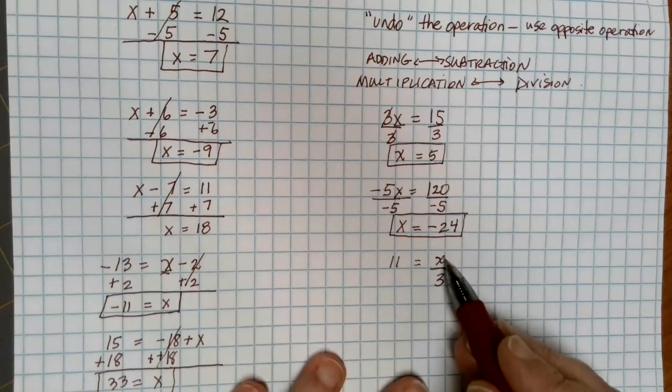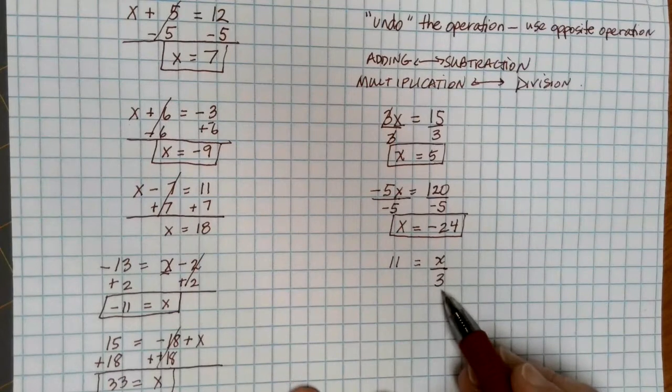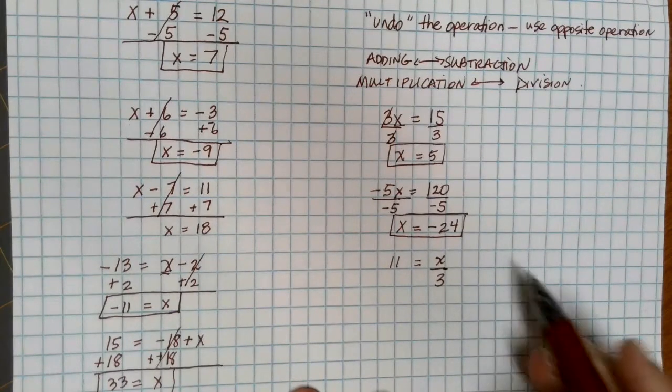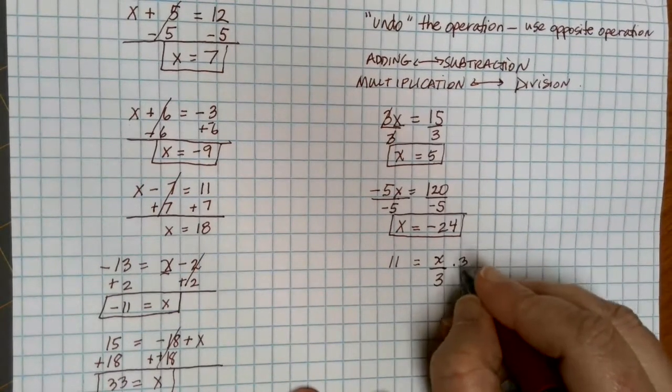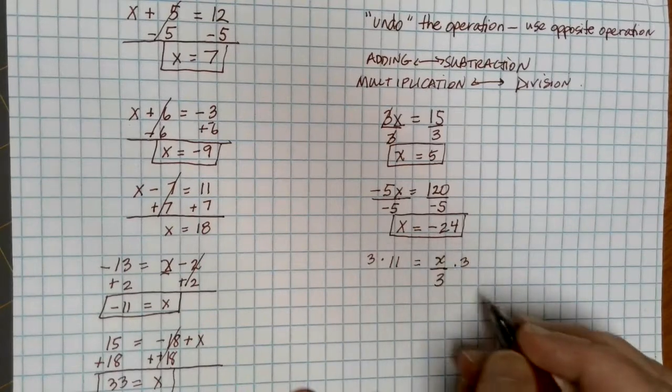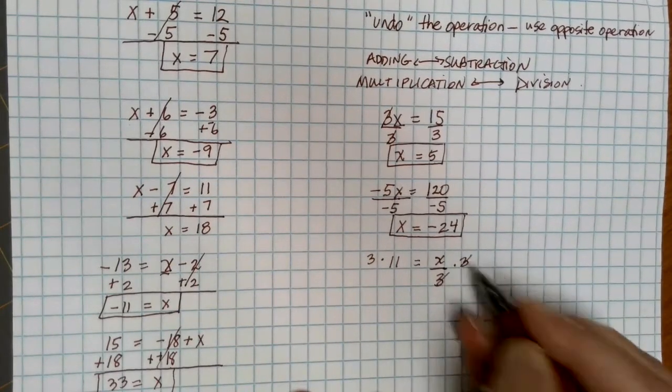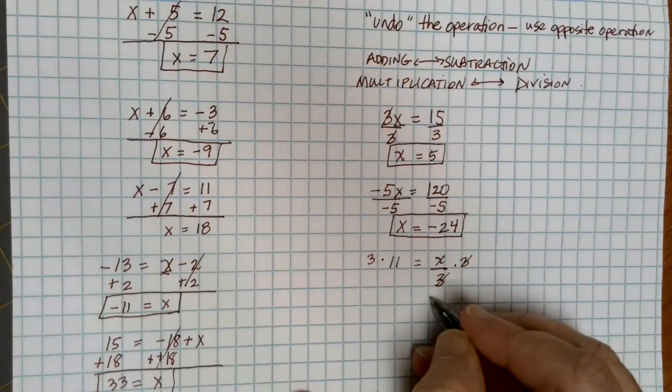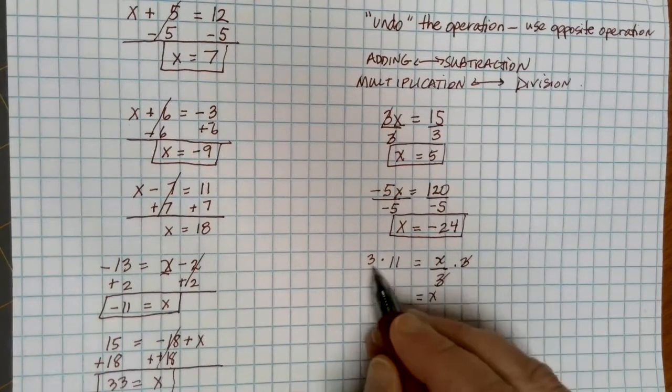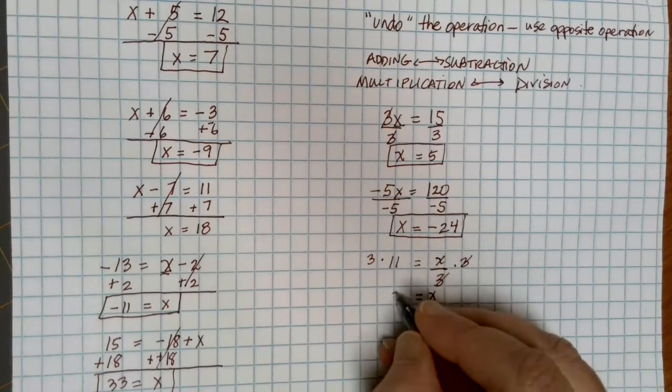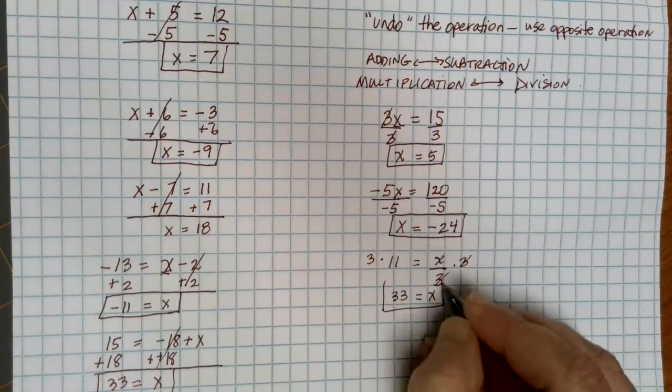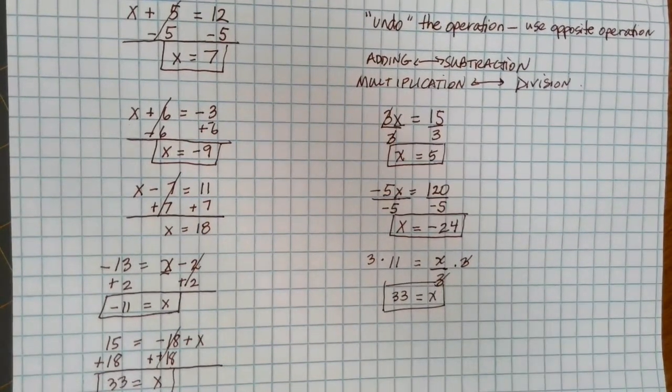In this problem, my x, to get it alone, it's being divided by 3. So to get rid of it, I'm going to need to times by 3 on both sides. Dividing by 3 and timesing by 3 undoes itself, and leaves me just with my x on the right side. On the left side, I have 3 times 11, which is 33. And I have a solution there.